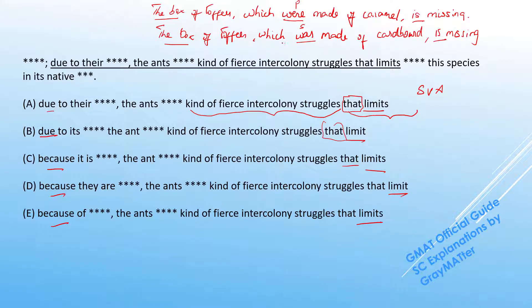So both of them are fine in this case because when we see the logic of the relative clause 'which were made of caramel,' it becomes apparent that it is referring to toffees.